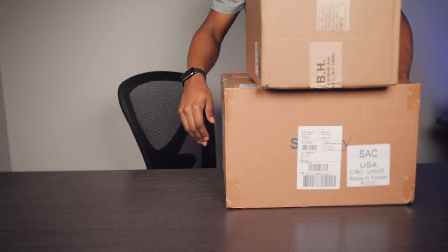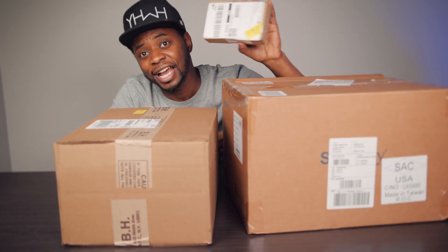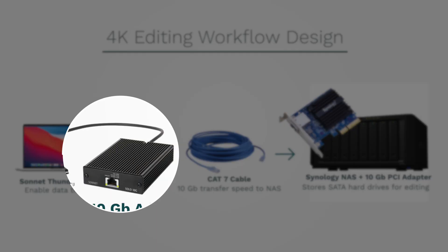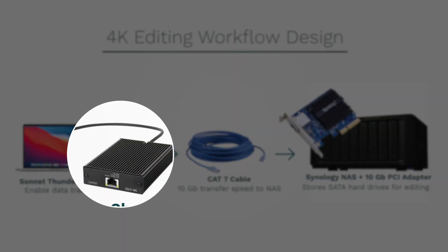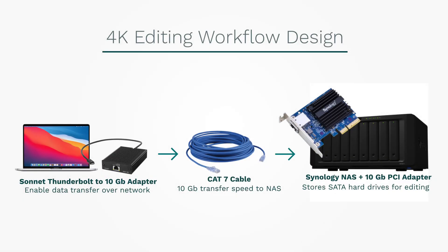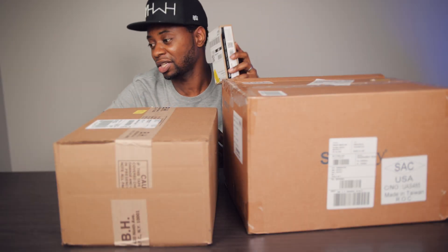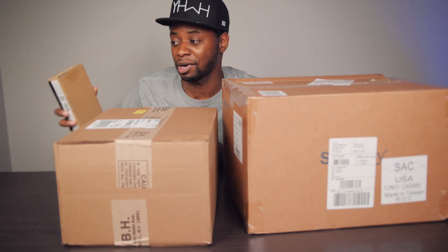Here we are at the B-roll studio. We've got three items. You've got to have the 10 gigabit adapter — this is what allows the data to go from my computer via Thunderbolt into this adapter, to then flow 10 gigabit directly into the server, the Synology, the disk station. We also have of course the Synology itself, so let's get into that first.